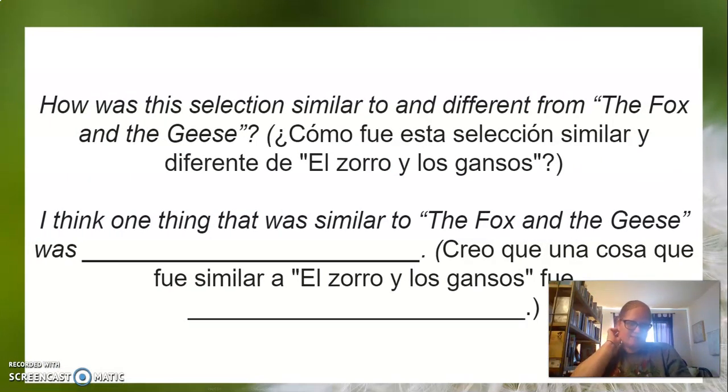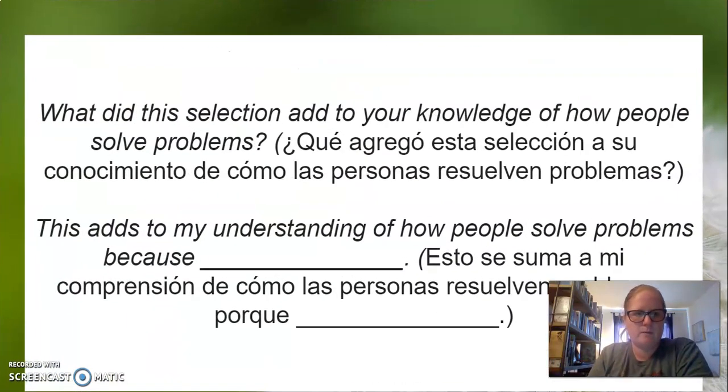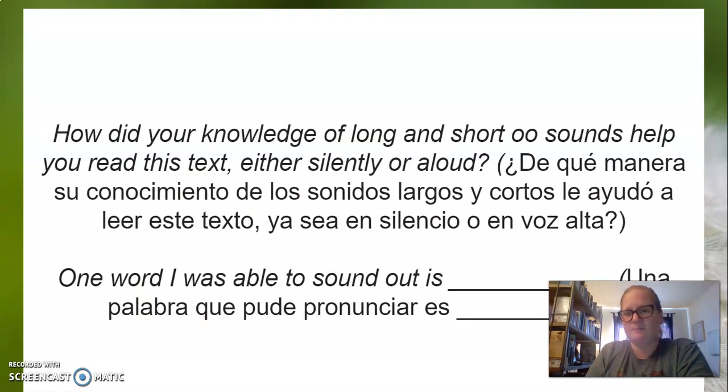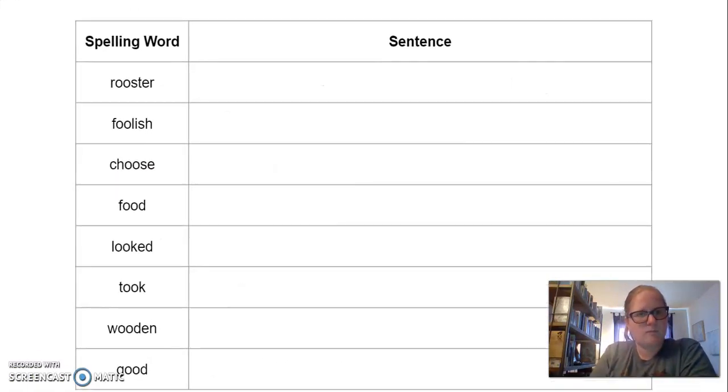Now for the next few slides, I have a lot of different questions. Now these are questions about the reading. How is the selection similar to and different from the fox and the geese? I think one thing that was similar to the fox and the geese was. I think one thing that was different to the fox and the geese was. These are just some examples for you to use. If you want, you don't have to use these if you do not want to. What did this selection add to your knowledge of how people solve problems? This adds to my understanding of how people solve problems because. How did your knowledge of long and short double O sounds help you read this text, either silently or aloud? One word I was able to sound out loud is.